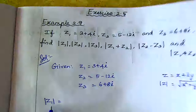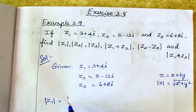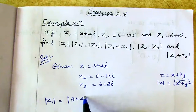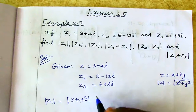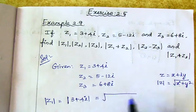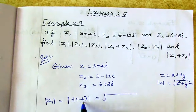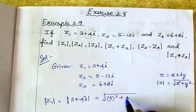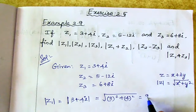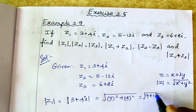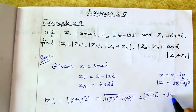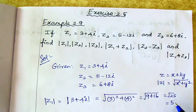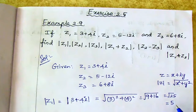So for z1, modulus of z1 is equal to modulus of 3 plus 4i. z1 value is equal to 3 plus 4i, where x is the real part and y is the imaginary part. So 3 squared is equal to 9, 4 squared is equal to 16. Square root of 25 is equal to 5. So modulus of z1 is equal to 5.